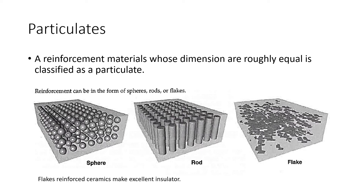Particulates are another type of reinforcement where dimensions are roughly equal — classified as particulate. Flakes reinforce ceramics and make excellent insulators. Concrete is also a ceramic composite — you can put recycled materials like glass bottles, plastic bottles, or metal from soda cans chopped up into concrete. You can build fences and structures this way, and you'll see it won't crack like pure concrete does.